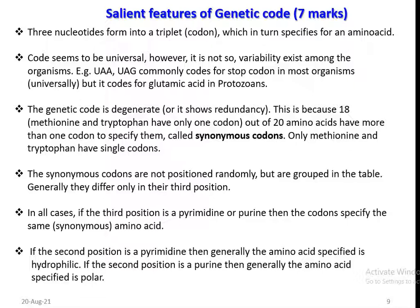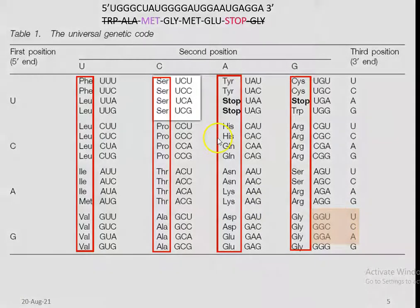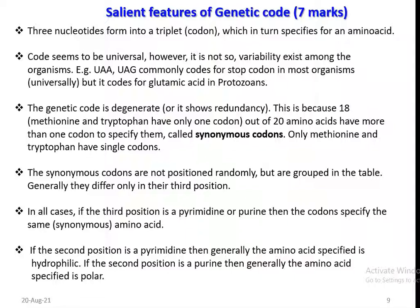If the second position is a pyrimidine, then generally the amino acid specified is hydrophilic in nature. The hydrophilic amino acids include glycine, serine, tyrosine, glutamine, lysine, and aspartic acid. For example, in the synonymous codons of serine, the second position is a pyrimidine and not a purine. Whereas if the second position is a purine, then the amino acid specified will be polar in nature.